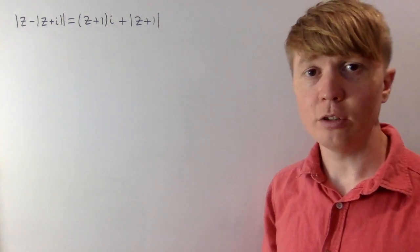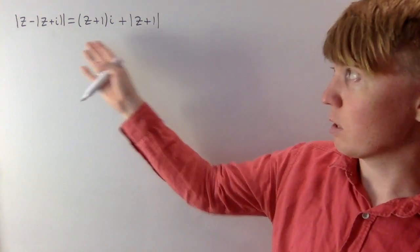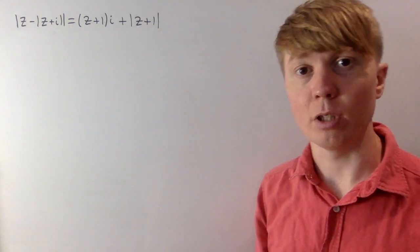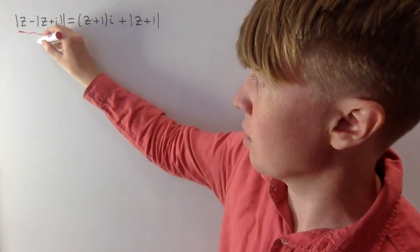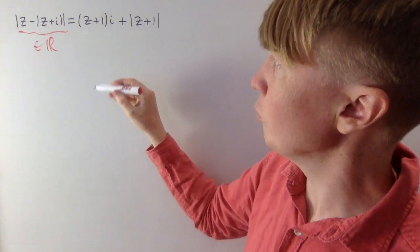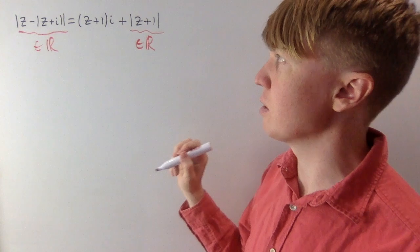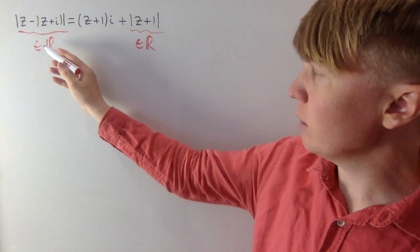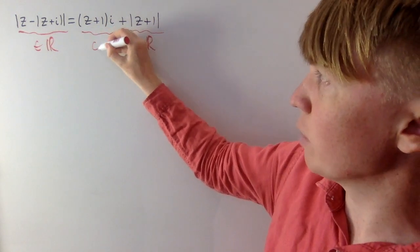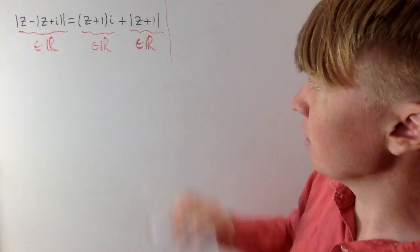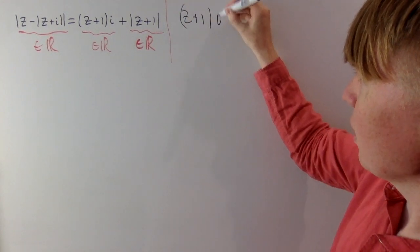We're going to solve this equation — we need to find all complex numbers z which satisfy it. Looking closely, there's a nice observation: the left-hand side is the absolute value of some complex number, so it's real. On the right-hand side, the absolute value term is also real. That means the remaining term must also be real, so z plus i has got to be real.